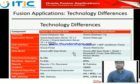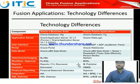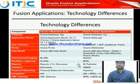In Oracle EBS, we use Financial Statement Generator for financial reporting, but in Oracle Fusion, Oracle Hyperion — which was previously a separate product — has been integrated, and the Financial Statement Generator has been replaced by Oracle Hyperion.